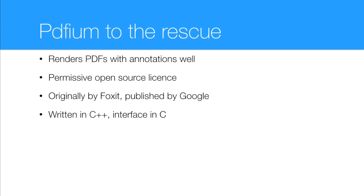So I came across PDFEM, which was originally by Foxit Software — you're probably familiar with their PDF tools. As far as I can tell, it was purchased by Google and then released as an open-source project under a permissive licence. I believe they use it inside Chrome for PDF rendering. It's not specifically an iOS project, but it can be built for iOS without too much trouble. I built a test app, put it through all its pages, and found that it actually renders all of the annotations we need really well.